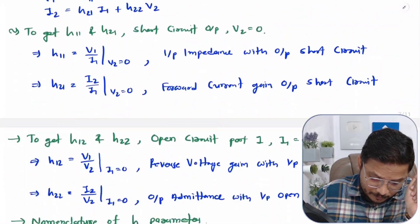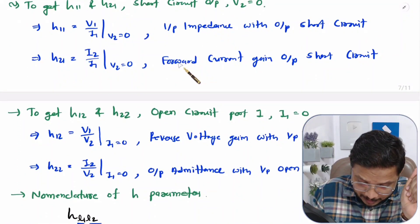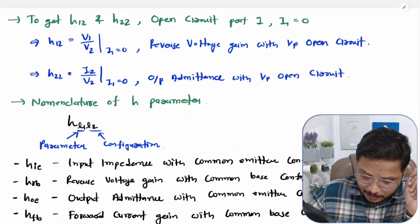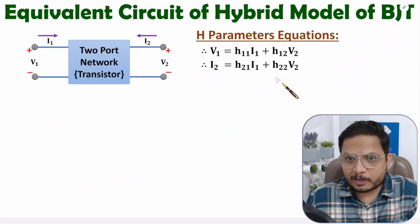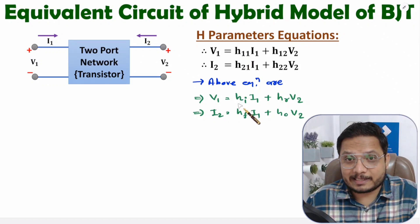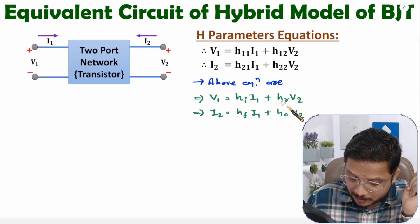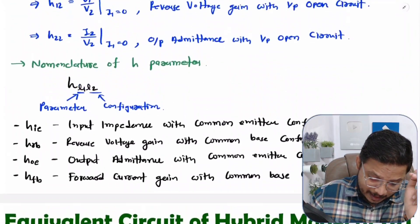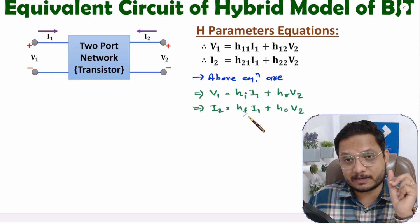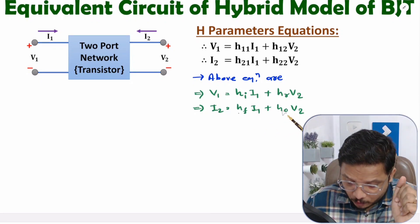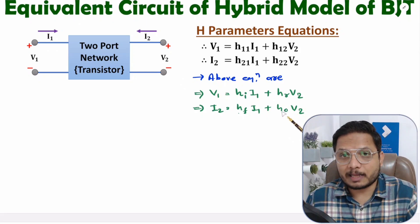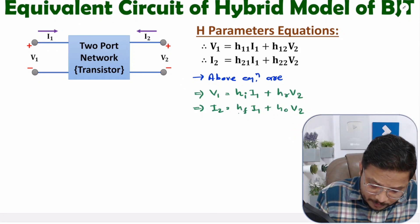Now let me rewrite the H parameter equations using proper nomenclature. H11 is HI (input impedance), H12 is HR (reverse voltage gain), H21 is HF (forward current gain), and H22 is HO (output admittance). Based on these equations, let us now try to make the equivalent circuit of the transistor, after which I will explain a practical example.